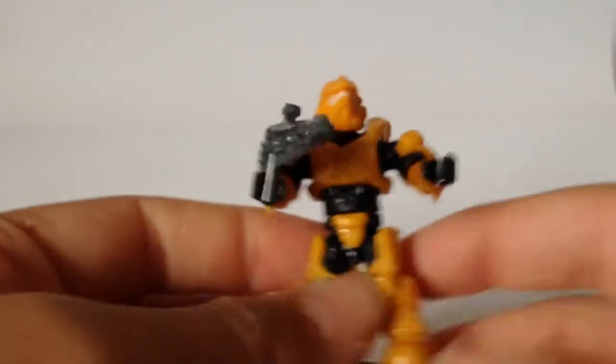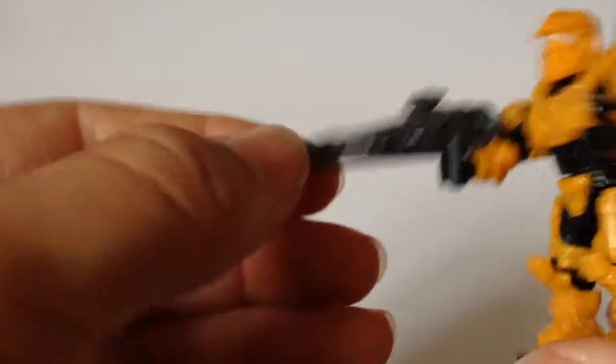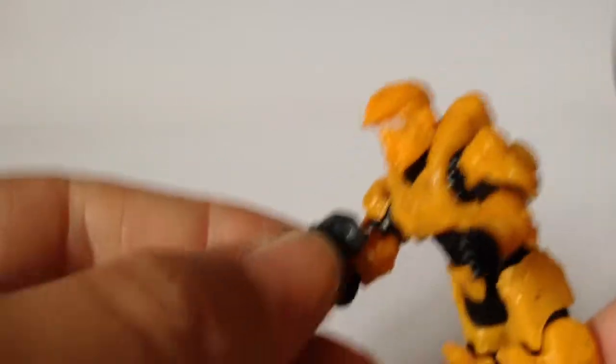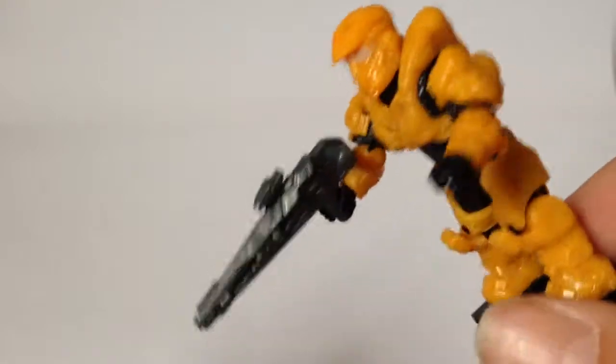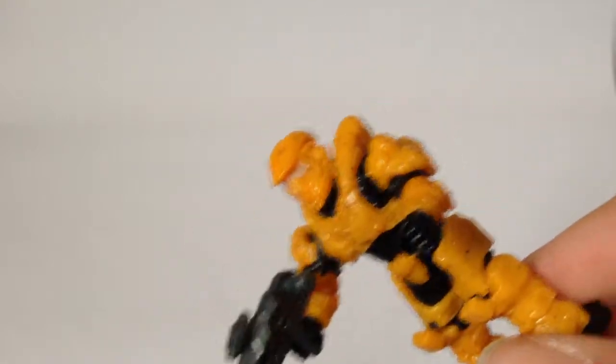Next up, we have the Aviator. He comes with a light rifle, there we go. All of these are forerunner weapons, so they will all appear in the Halo 4 campaign.